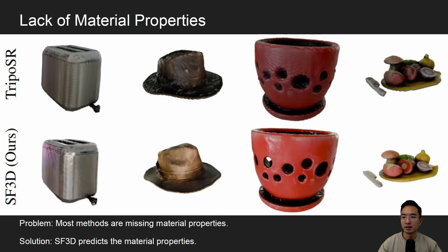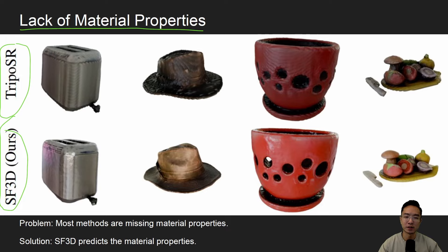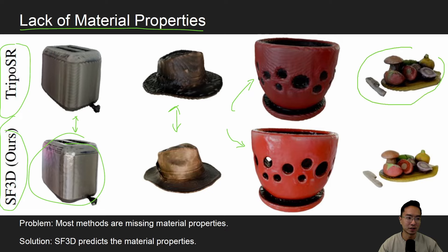Another improvement is material properties. Most methods are missing material properties, but SF3D is able to capture some of that. If you compare the top row (TripOSR) with the bottom row (SF3D), the top looks duller whereas the bottom has a nice reflective property. The illumination on the bottom looks much better — brighter and more vivid.